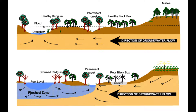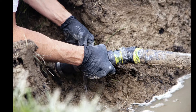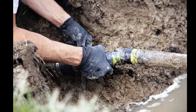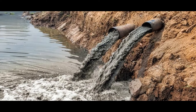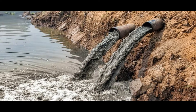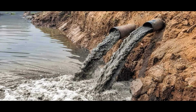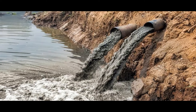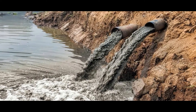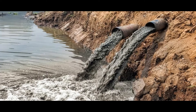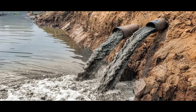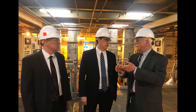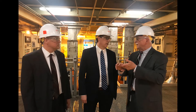Groundwater that is contaminated by a septic leak will eventually contaminate any nearby surface water, just as surface water contaminated by industry will seep into adjacent aquifers. Since groundwater is difficult to measure compared to surface water, those who create policy and legislation often neglect the relationship between the two.